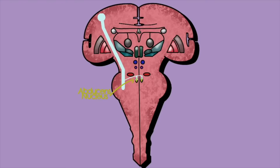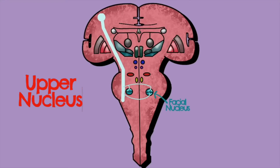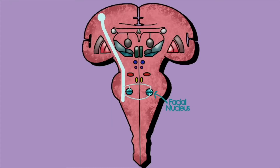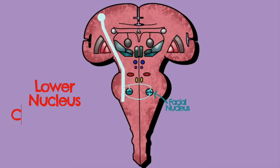Remaining in the pons is the facial nerve, where we see a variation from the typical bilateral innervation. The facial nucleus is split into an upper nucleus and a lower nucleus, corresponding to the upper and lower quadrants of the face. The upper nucleus is bilaterally innervated — the same as other nuclei — however, the lower nucleus has only a single contralateral innervation from the upper motor neuron.